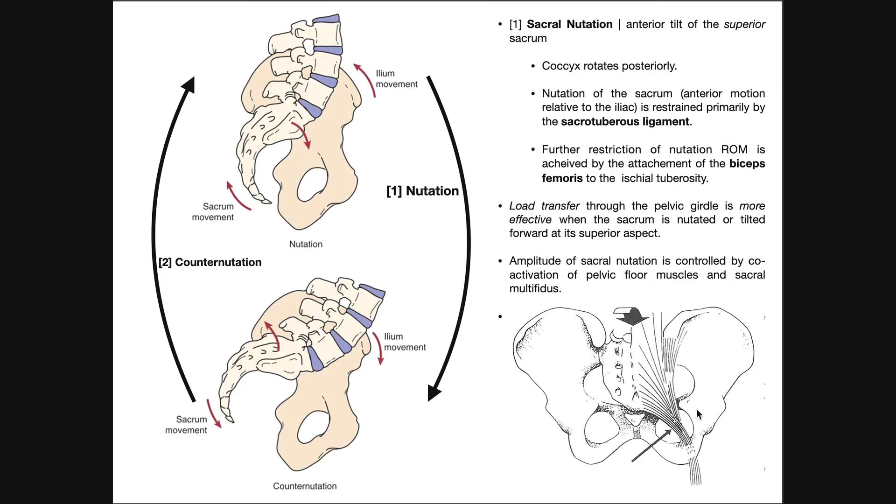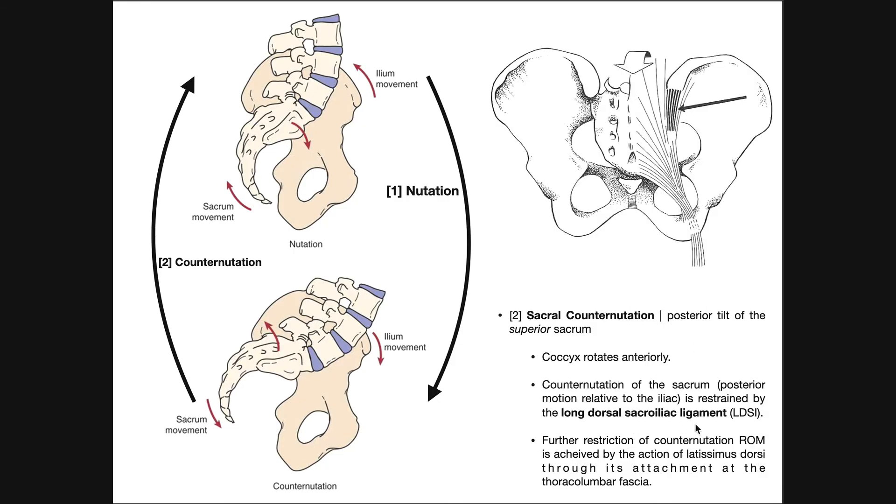Remember that the sacrotuberous ligament, which is right here, restricts sacral nutation. Long dorsal sacroiliac ligament restrains sacral counter-nutation. And we can also get further restriction of counter-nutation range of motion by co-activation of latissimus dorsi, actually, through its attachment at the thoracolumbar fascia. But the major things to know here would be what counter-nutation is, and also the major ligament that restricts that range of motion, that is long dorsal sacroiliac ligament.